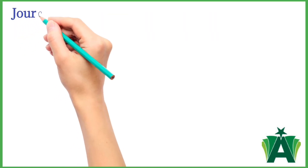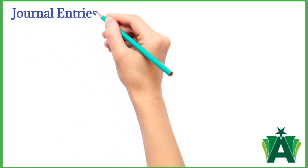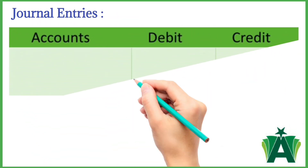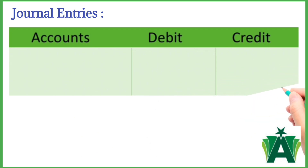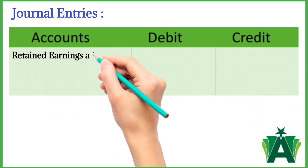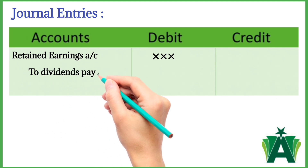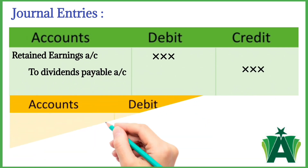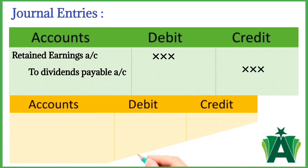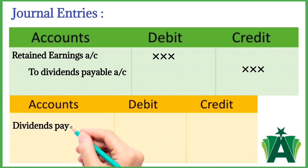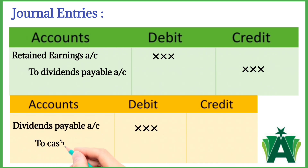Here is a comprehensive explanation of dividend-related journal entries. When the board of directors announces the dividend payment, the journal entry will be: retained earnings account debit, dividends payable account credit. When the company actually pays the dividend to shareholders, the journal entry will be: dividends payable account debit, cash account credit.